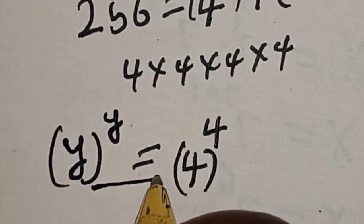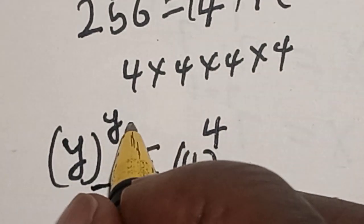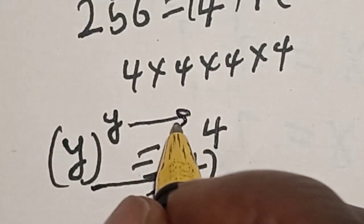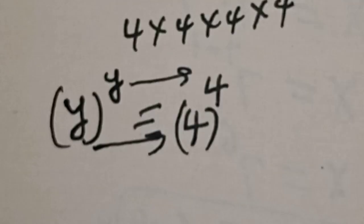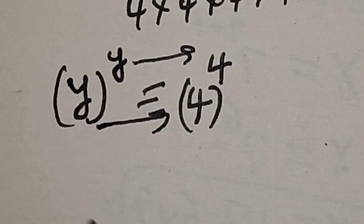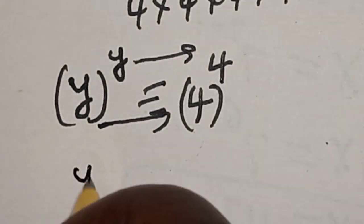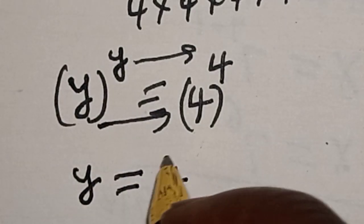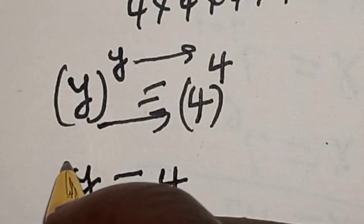Observing the equation, the base is equal to the base and the exponent is equal to the exponent. If you observe very well, y is equal to 4.